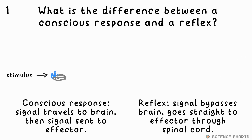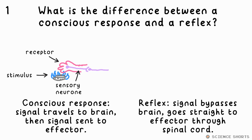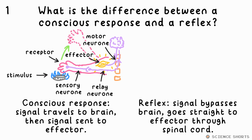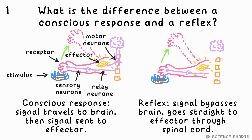A conscious response to a stimulus involves the signal going from the receptor — say skin, for example — through a sensory neuron to relay neurons up the spinal cord to the brain. You make the decision to act and then a signal goes back via relay and motor neurons to an effector, say the muscles in your arm. A reflex arc is similar, but the signal goes straight through the spinal cord to the motor neurons and effector, bypassing the brain. You act before you even realise what's happened.